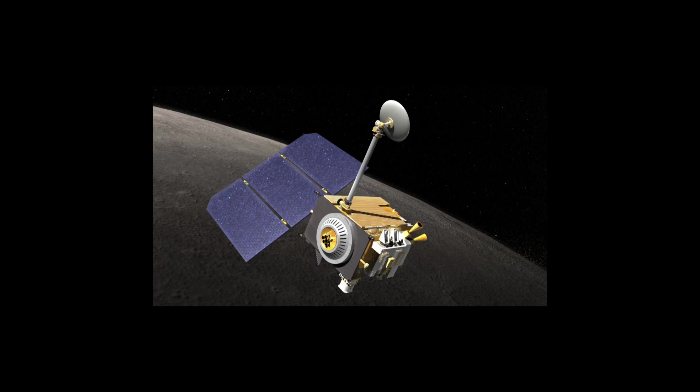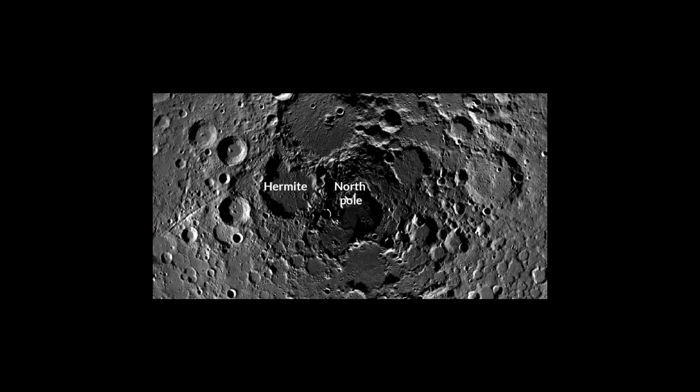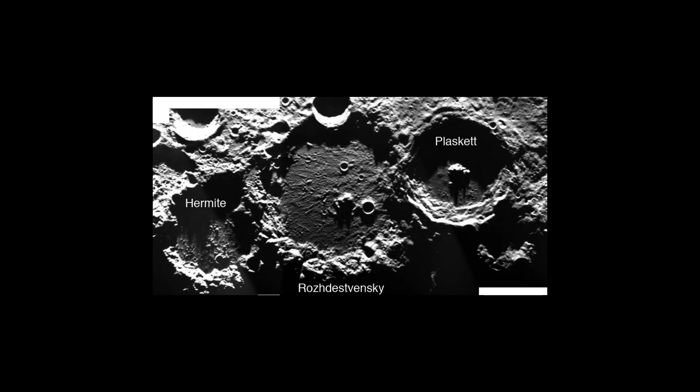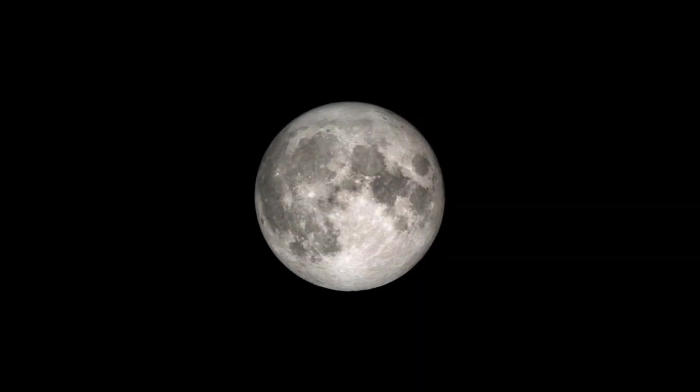In 2009, NASA's Lunar Reconnaissance Orbiter recorded a temperature of negative 410 degrees Fahrenheit, negative 250 degrees Celsius, on the floor of the Moon's Hermite Crater. Till this day, this is the coldest temperature on a celestial body in our solar system.